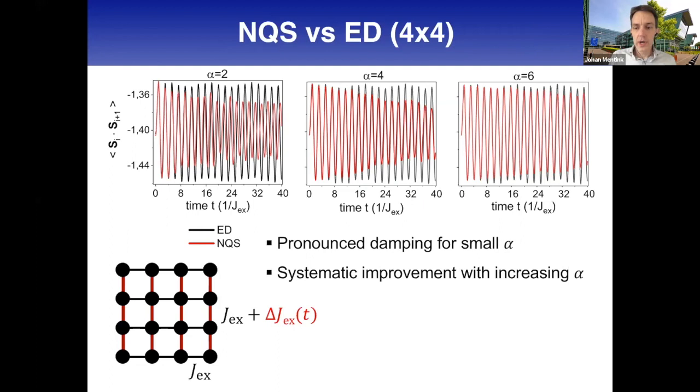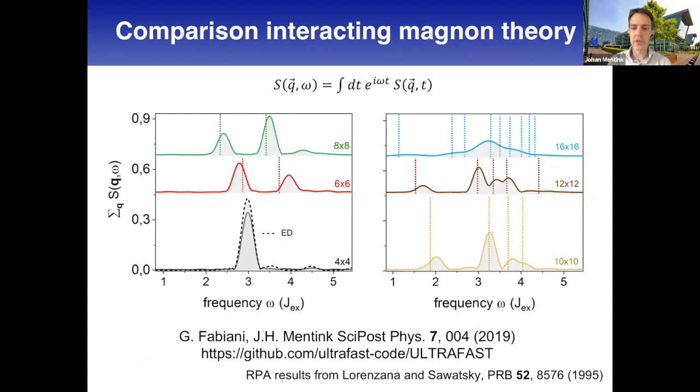For 4x4, but we're not interested in this system - we want to go to bigger systems. To have some comparison we started comparing with results from interacting spin wave theory. In the end we're interested in magnon propagation, so at least in interacting spin wave theory we know which modes to expect. Here we show results of this comparison - this is the integrated structure factor obtained by Fourier transforming real space correlations both in space and time.